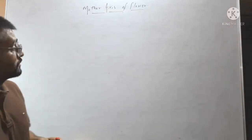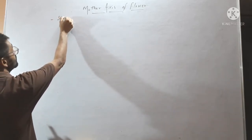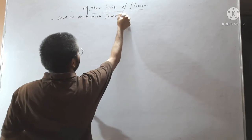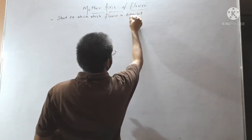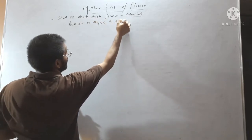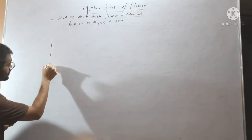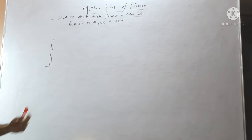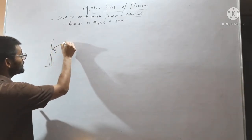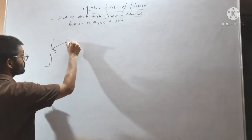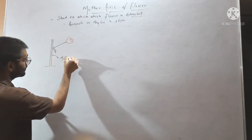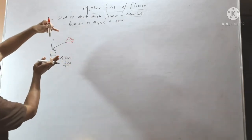What is the mother axis of a flower? The mother axis of a flower is the shoot on which the flower is attached. It may be a branch or may be a stem. Suppose it is a main stem of a plant — if a flower arises on this main stem, then this main stem will be called the mother axis. It is the axis on which the flower is attached.